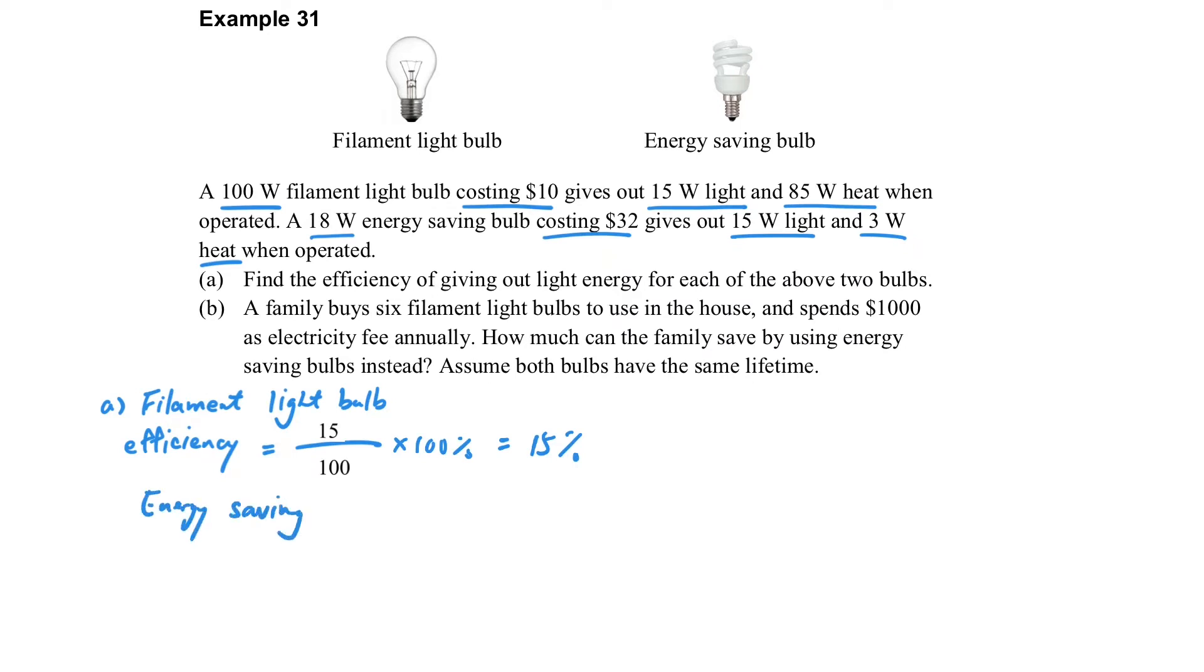How about for the energy saving bulb? For the energy saving bulb, the efficiency. Also, the useful output is 15. And how about the input? The input is just 18 for this one. So you can see that it is more efficient than the filament bulb.